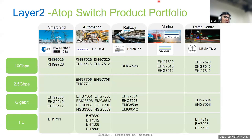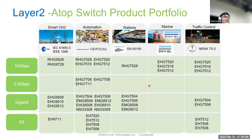Our Layer 2 switches span multiple verticals. Smart grid needs different types of switches, and automation also has different types at different speeds. Some products can be used across multiple vertical markets — for example, the RIG7528.